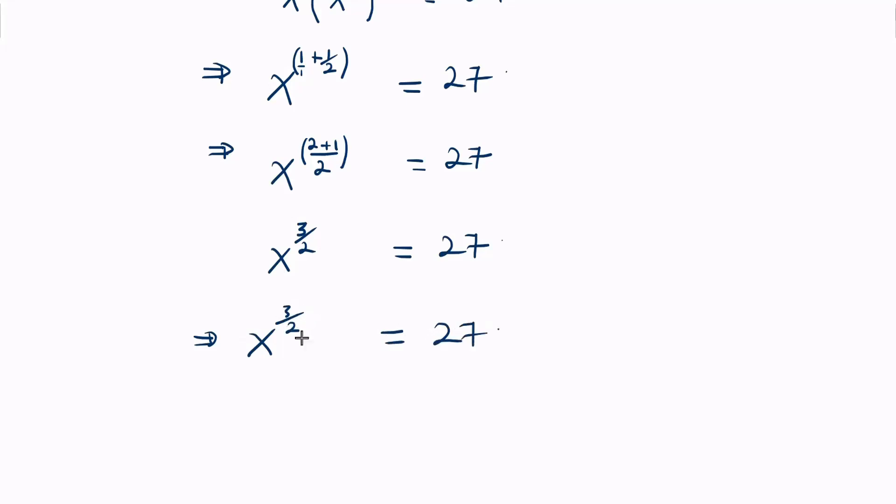What I mean is, the reciprocal of 3 over 2 is 2 over 3. So we're going to multiply this by its reciprocal.